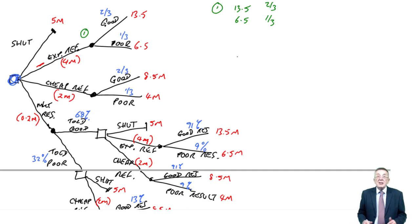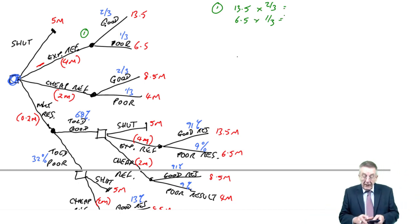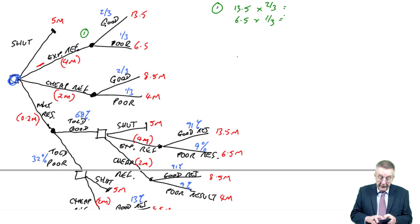And so, we'll remove the uncertainty, we'll replace it with the expected value. So, as always, multiply by the probabilities and add up. So, 13.5 times two thirds is nine. Six point five times a third is two point one seven. Eleven point one seven.